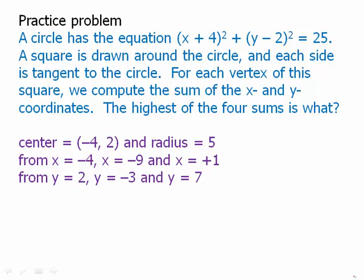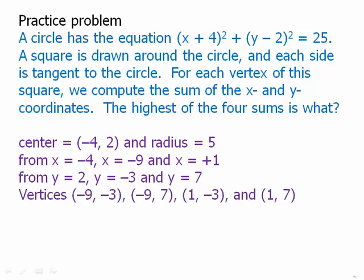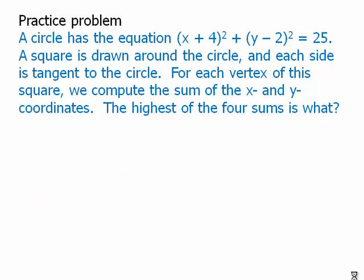The vertices are the places where those lines intersect, giving us four points. Taking the sum of coordinates for each vertex, we see the highest sum is the one with the two positive numbers: 1 and 7. One plus 7 is 8. It makes sense that the highest sum would be the vertex on the upper right side of the square, which obviously has larger coordinates than any of the other three. So the sum is 8 — we choose 8.